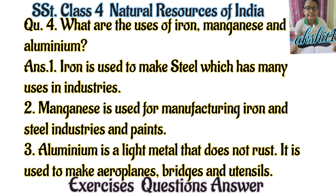Question number 4. What are the uses of iron, manganese and aluminium? Answer: 1. Iron is used to make steel, which has many uses in industries. 2. Manganese is used for manufacturing iron and steel industries and paints. 3. Aluminium is a light metal that does not rust. It is used to make aeroplanes, bridges and utensils.